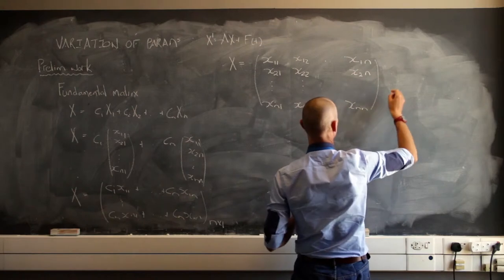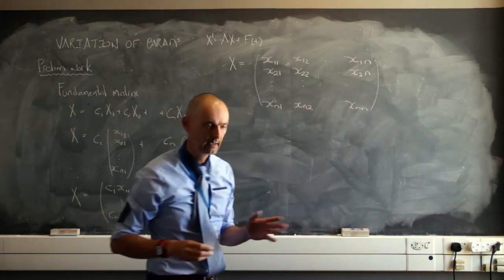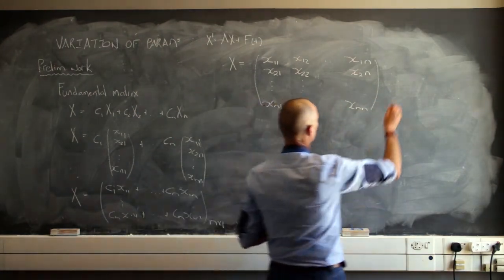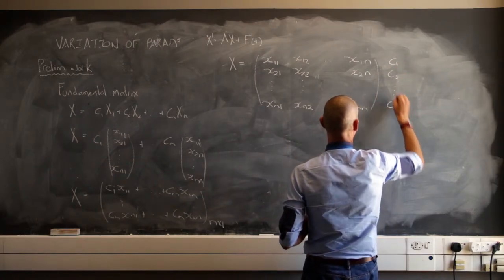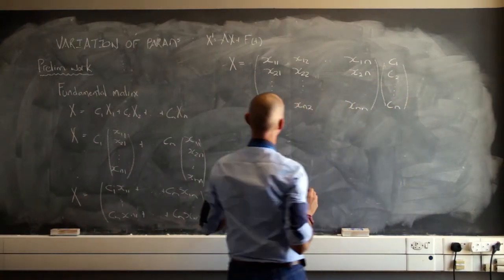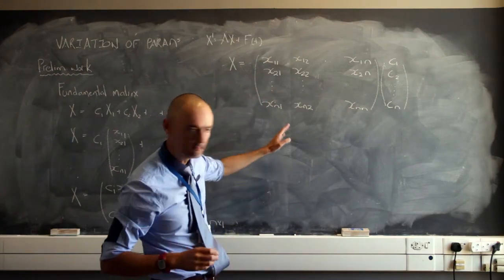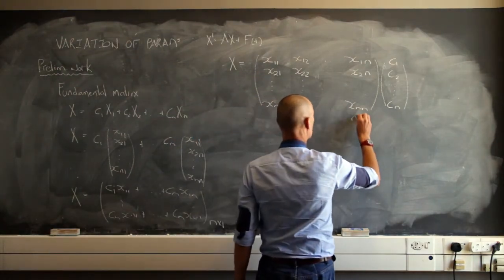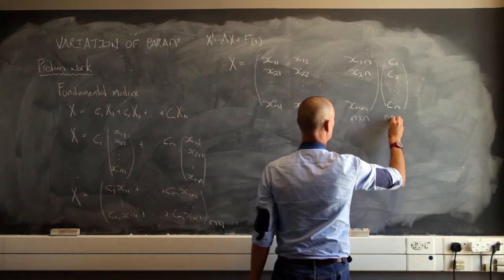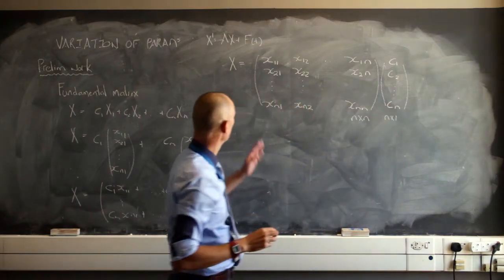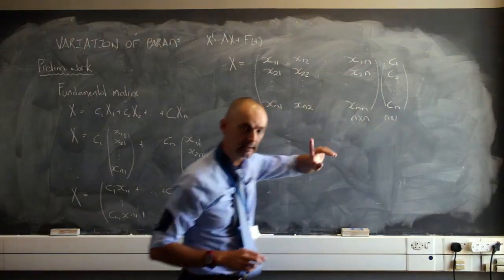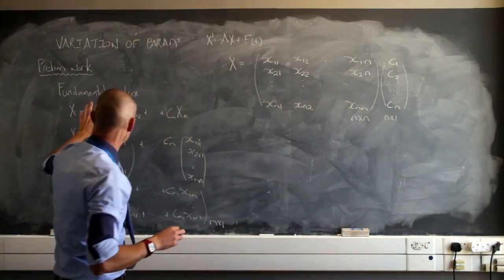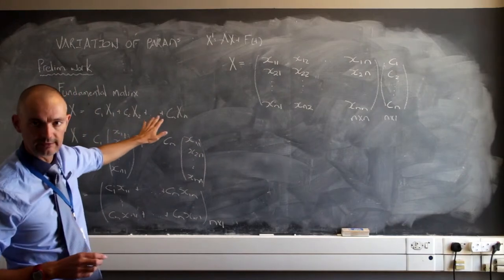I can write this matrix times this column matrix that I'll call c, and c will be c sub 1, c sub 2 all the way down to c sub n. If I did this, now remember this is an n by n matrix and this is an n by 1 matrix. So if I multiply it in this order from here to there, remember I started off by saying suppose that this is the set of solutions.